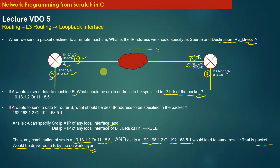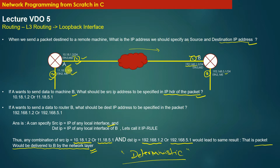However, there is a need to come up with one deterministic way to specify the source and destination IP address in the packet. In networking, there should be a deterministic rule using which machines specify a particular source IP address and destination IP address.